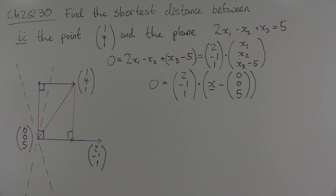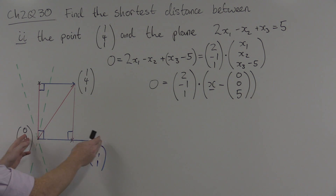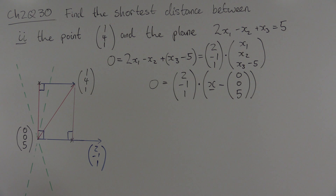Now we can compute the shortest distance between the point and the plane. We need only shrink the normal by an appropriate amount and compute the length.